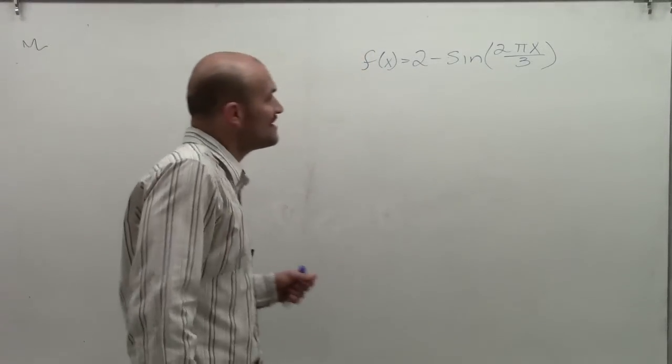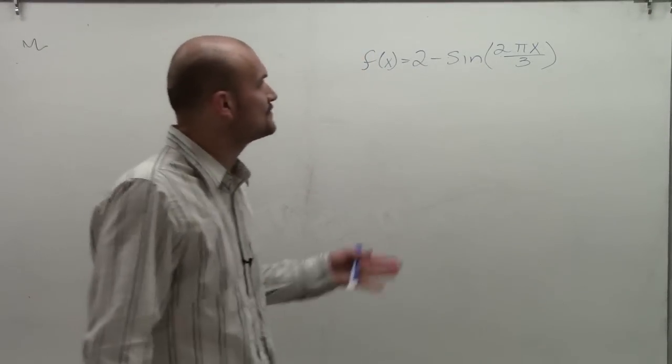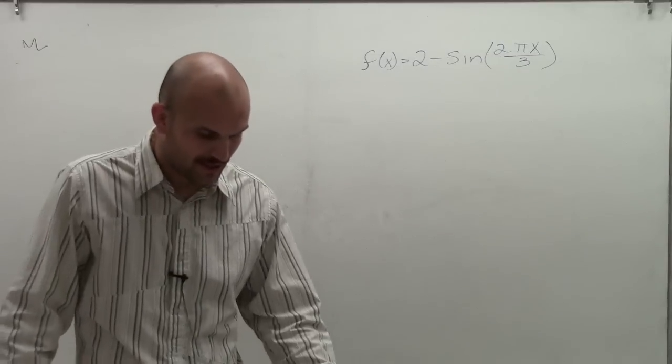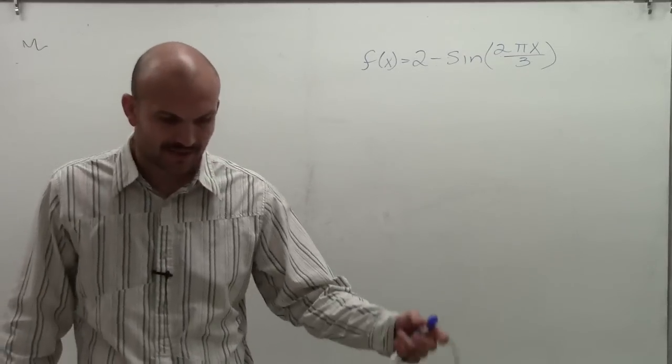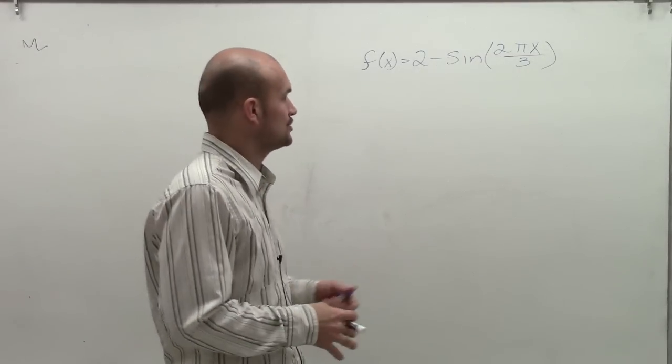Here we go. So I have f of x equals 2 minus sine of 2 pi x divided by 3. So to graph a problem like this, there's a couple things that we want to make sure that we see on this graph to be able to change it.